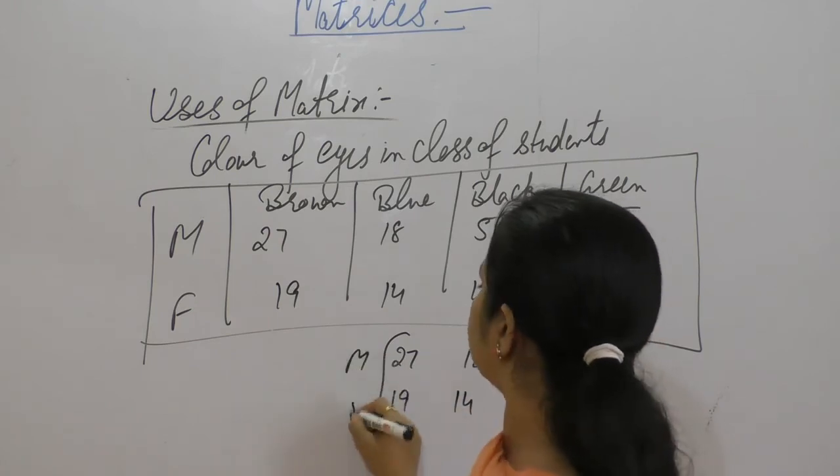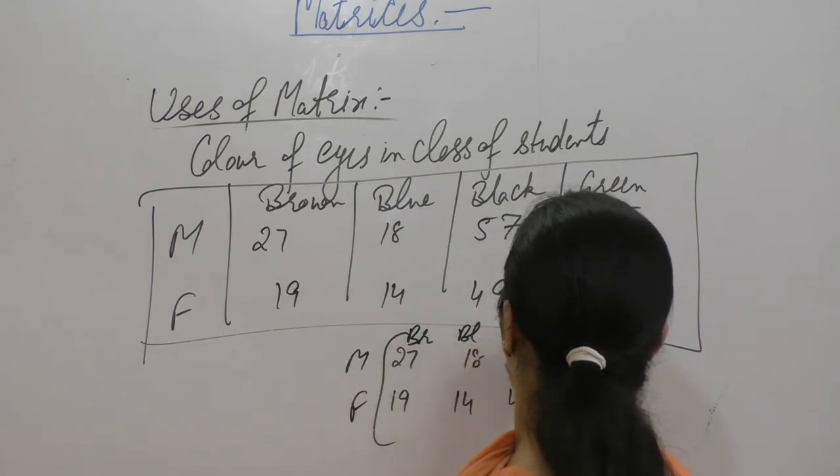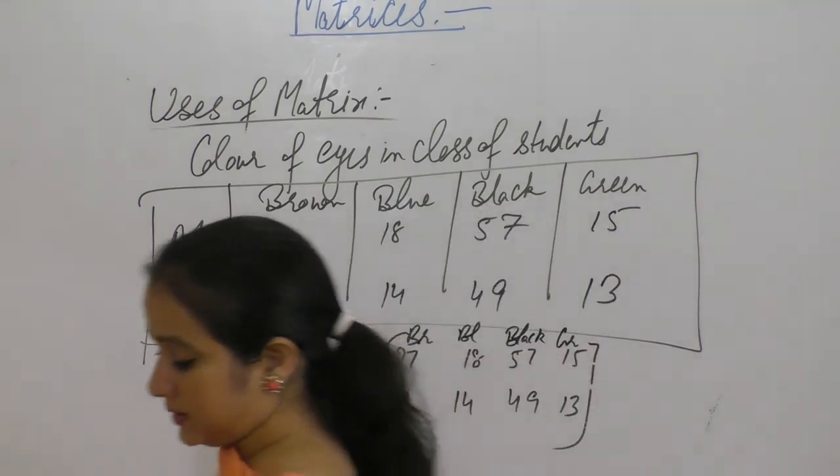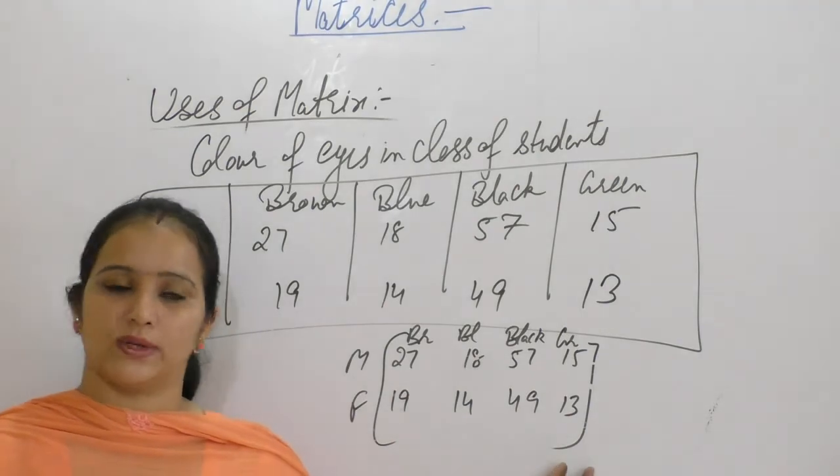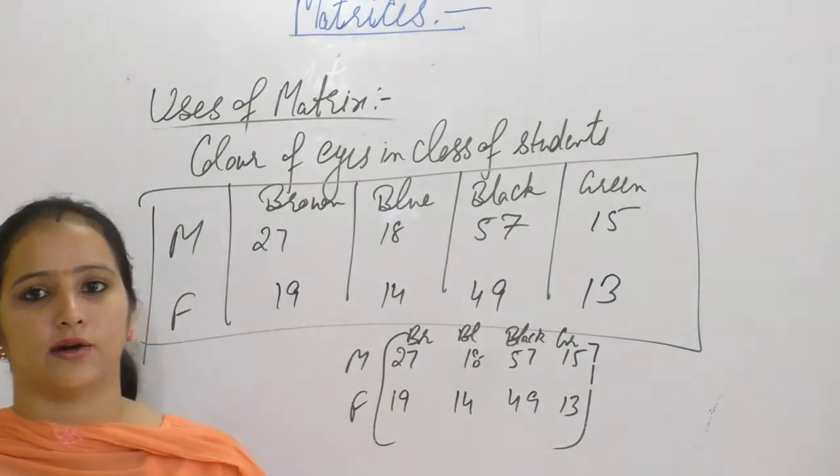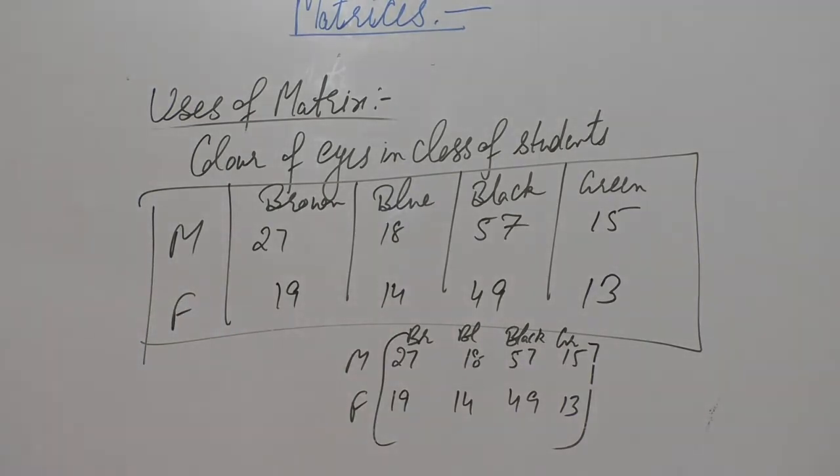These are males and females color. So each row represents male and female students. And each column represents the color of eyes. Each column represents different eye colors.